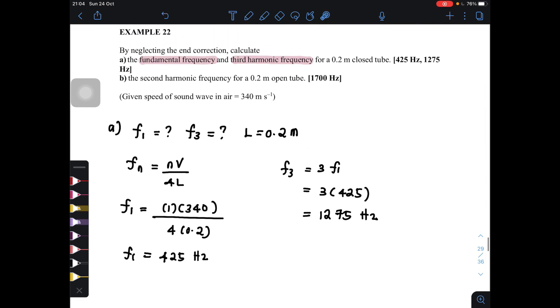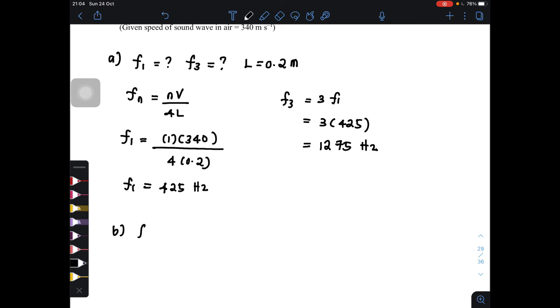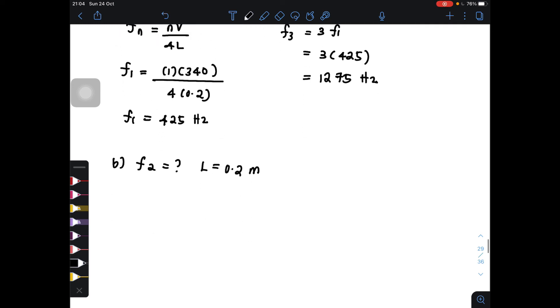Okay, so next one is for the open tube. And then we want to find the second harmonic frequency. Second harmonic, F2. And then given the length is 0.2 meter. So use the general formula for open tube. Okay, this one for open tube. Fn is equal to nV divided by 2L.